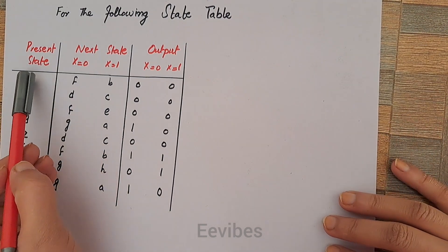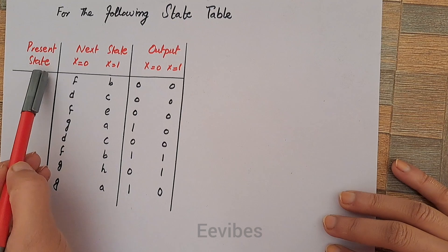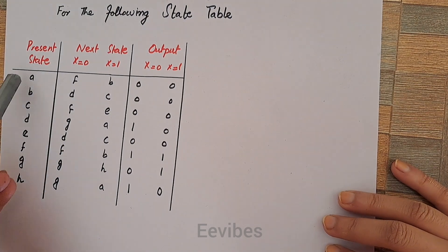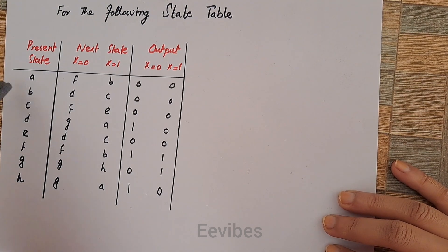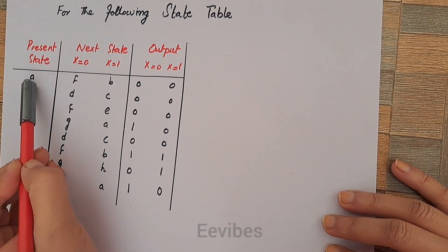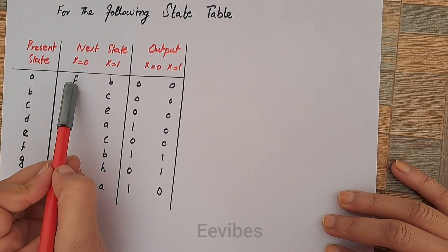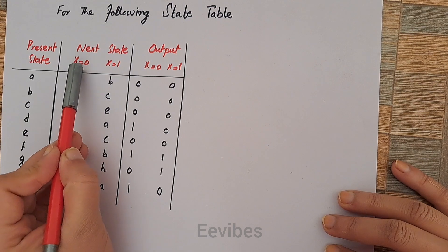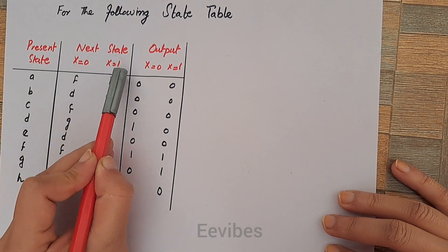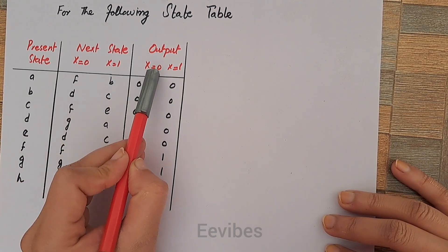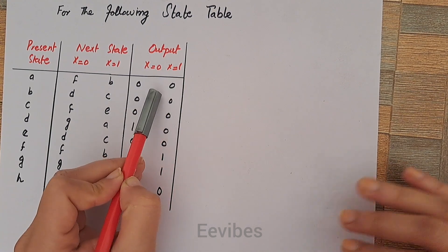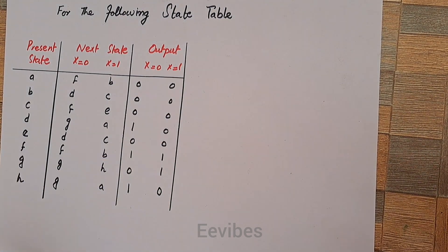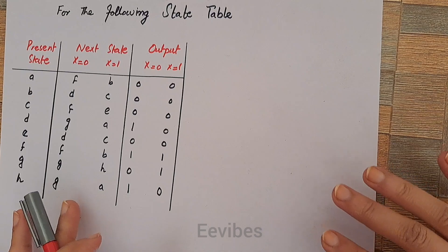In this particular state table, you can clearly see that the present states are starting from A to H — there are 8 states present. From each state, you are going into the next state corresponding to X equals 0 and X equals 1, and hence producing output accordingly. Let's draw the state diagram for this state table.